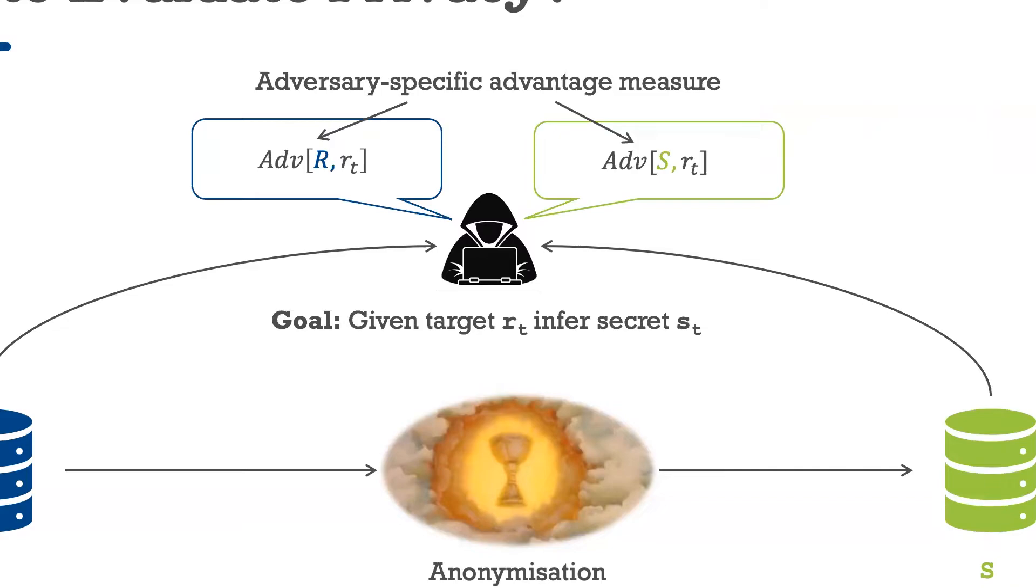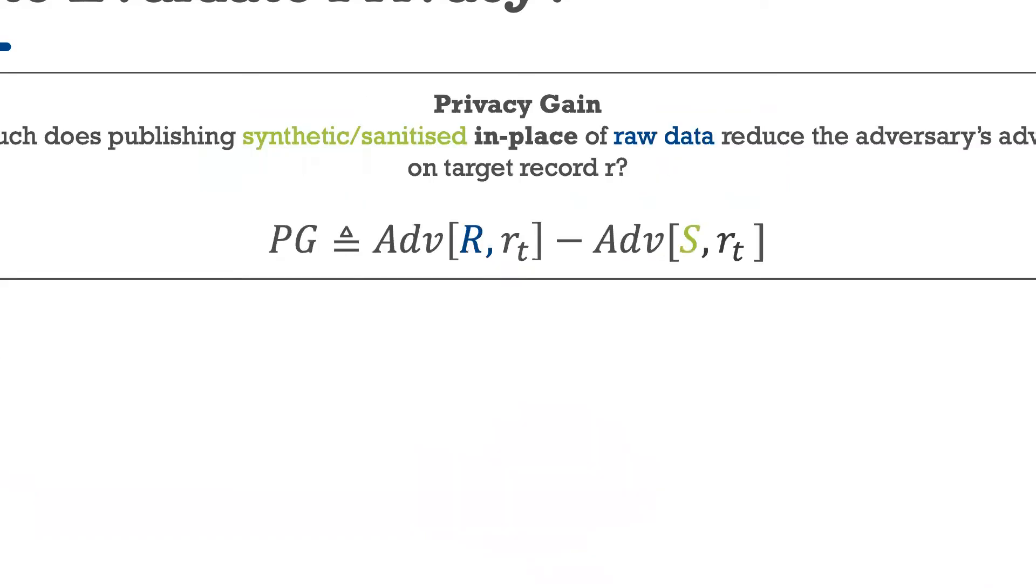A bit more formally for each privacy concern, we define an adversary specific advantage measure that captures how much risk publishing a raw or synthetic data set that includes the target record incurs compared to a data set without the target. Given the advantage measure, we can then quantify the privacy gain of publishing the synthetic data in place of the raw data as the reduction in the adversaries advantage when given access to S rather than R.